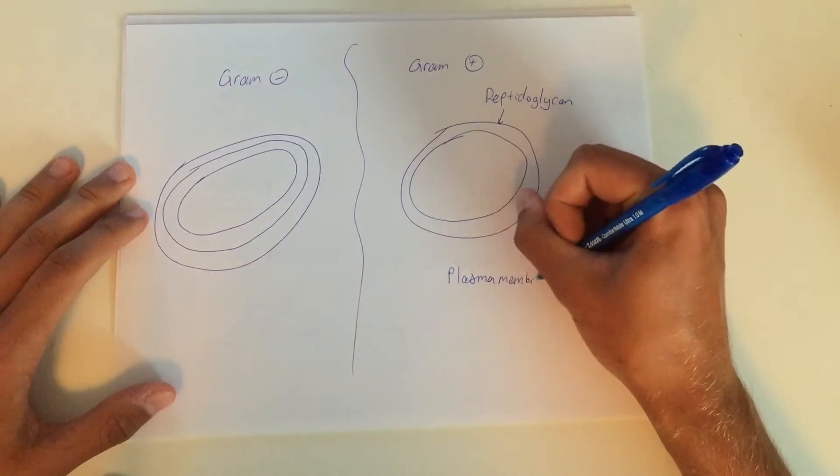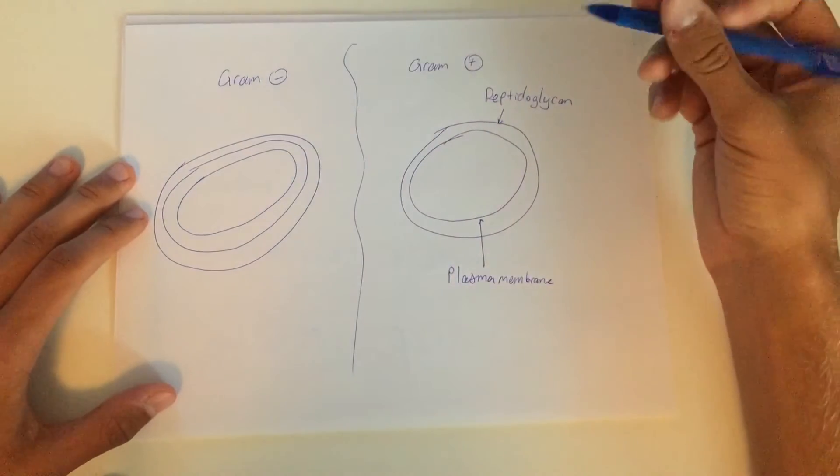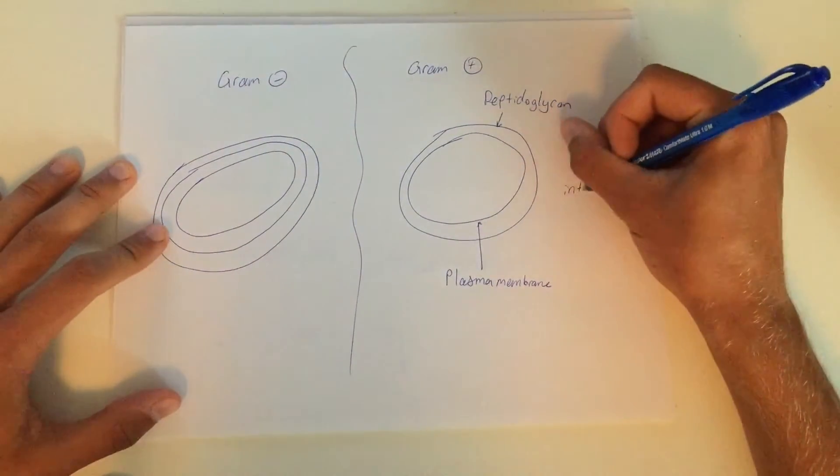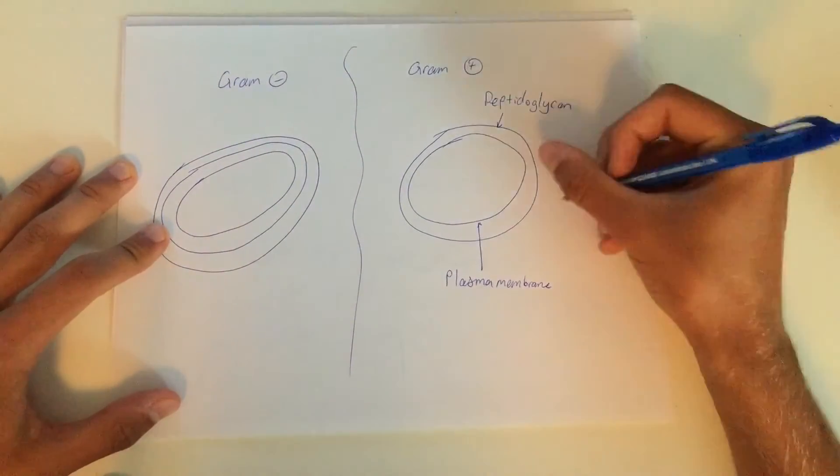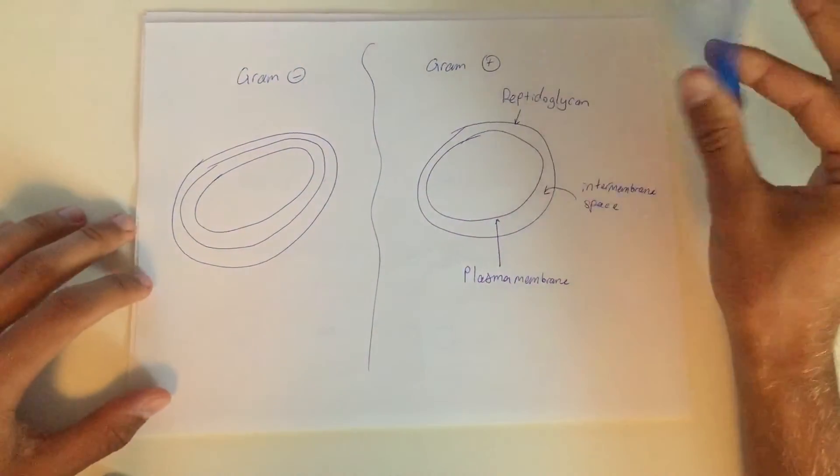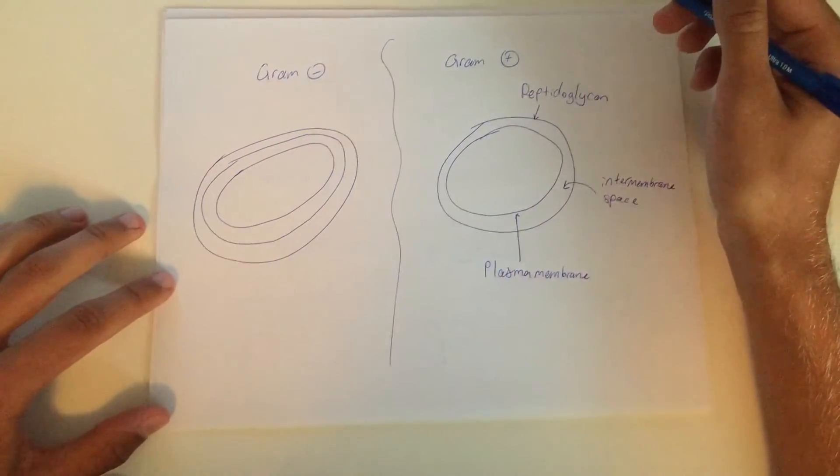However, there is a space between these two membranes called the intermembrane space, but that doesn't really matter right now. What we really want to focus on is peptidoglycan, which is a membrane composed of sugars and protein.